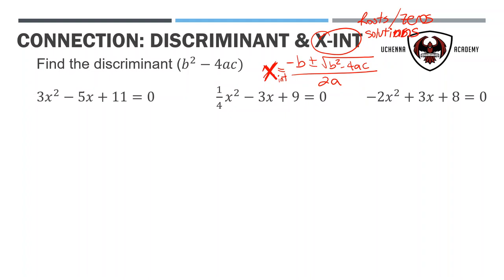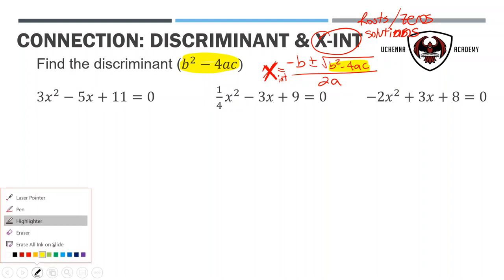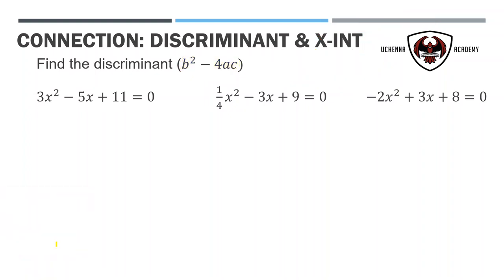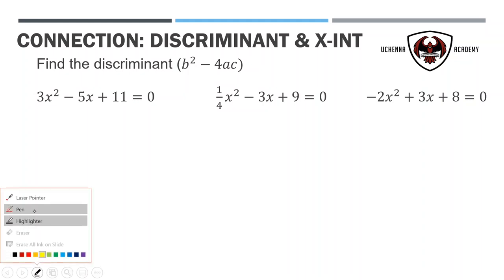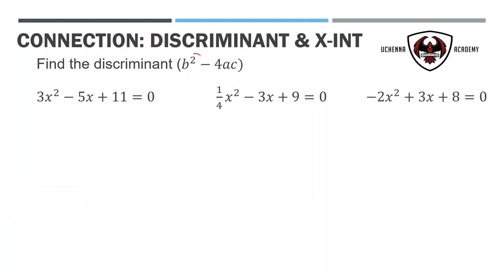Before you actually look for x-intercepts, do this dirty little trick — this discriminant idea. Why do we want to use the discriminant? Well, the discriminant is the piece underneath a square root, and we know that square roots must be zero or positive. So when we actually use the discriminant — the one part of the quadratic formula — we can find out a lot of information about our parabola or quadratic that we're trying to solve for.